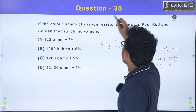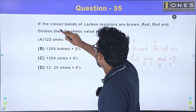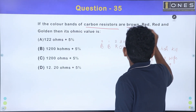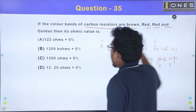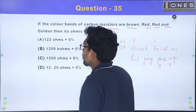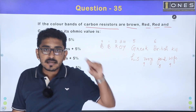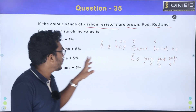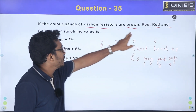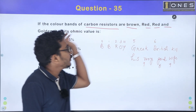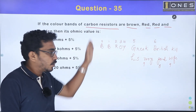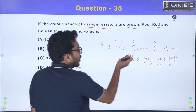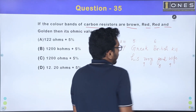Next question, question 35: if the color bands of a carbon resistor are brown, red, red, and gold, what is its ohmic value? We use the color code mnemonic BB Roy, Greek British Killers, Very Good Wife. Black starts at 0 and white ends at 9. Brown is 1, red is 2.